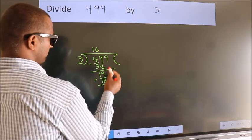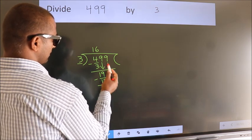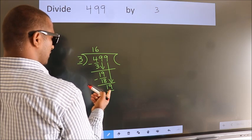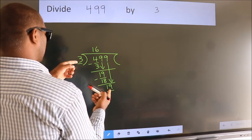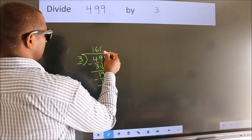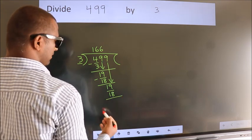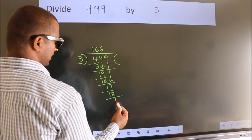After this, bring down the beside number. So 9 down. So 19. A number close to 19 in the 3 table is 18—3 times 6, 18. Now we subtract. We get 1.